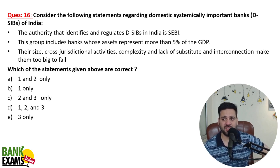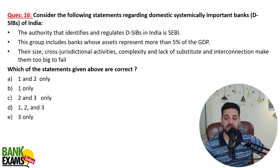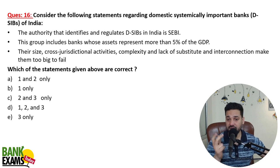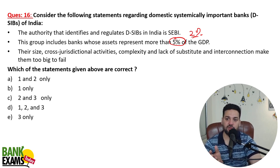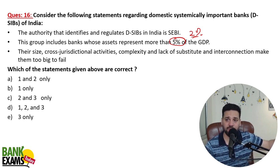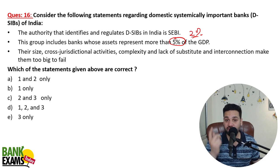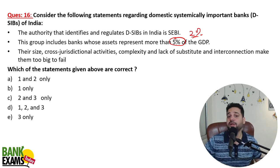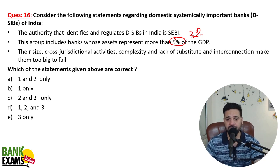Consider the following statements regarding domestically systemically important banks in India. Statement one: the authority that identifies and regulates D-SIBs in India is SEBI — is that correct? Statement two: the group includes a bank whose asset size represents more than 5% of GDP — this is actually false. It is minimum 2%, not 5%. If a bank's assets equal 2% of the country's GDP, it qualifies as a domestically systemically important bank. Only the third statement is correct.